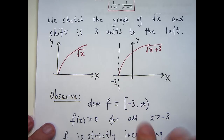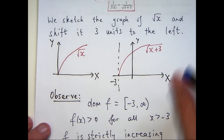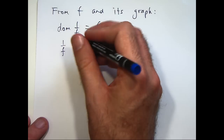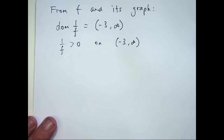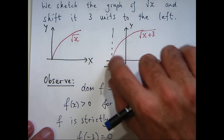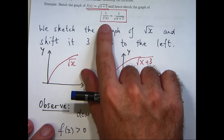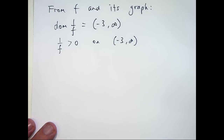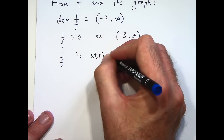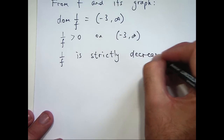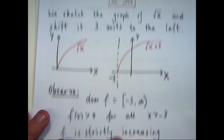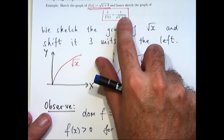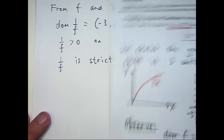Secondly, f is positive for all x greater than minus 3, so this means that 1/f must also be positive, because 1 divided by a positive number is positive. We also notice from the graph of the original function that f was strictly increasing. This means that 1/f, the reciprocal function, must be strictly decreasing. And finally, since f of minus 3 was 0 and we can't divide by 0, x equals minus 3 is a vertical asymptote of the reciprocal function.